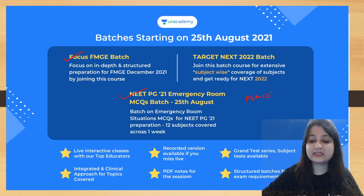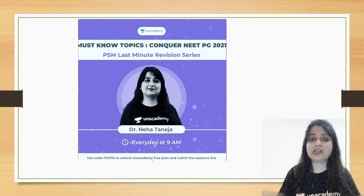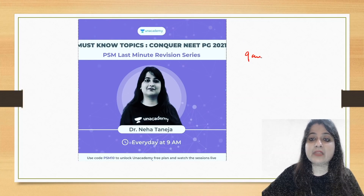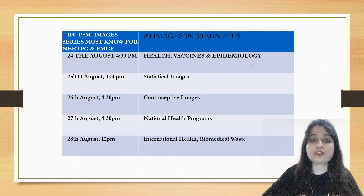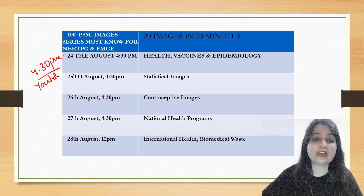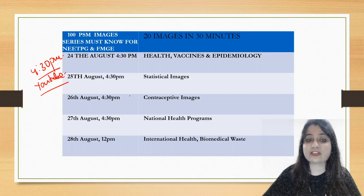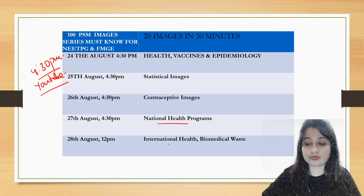You can use my code PSM10 and get a 10% off. A free grand test is happening on 28th August, and every morning at 9am on the Anacademy app I am taking a last minute revision for the most important topics of PSM. Tomorrow it is biostats. Also every day at 4:30pm on the Anacademy YouTube channel we are doing image-based sessions. Next is national health programs.